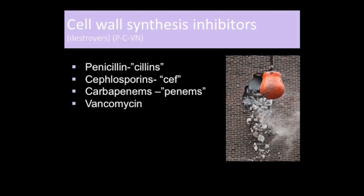The cell wall synthesis inhibitors kill the bacteria by preventing them from forming strong protective cell walls. Penicillin was our first antibiotic and saved soldiers during World War II from dying from infection. Just as soldiers destroy enemy walls, penicillin works by destroying the cell wall. For cell wall destroyers, think of PCVN: P for penicillin, C for cephalosporins and carbapenems, and V for vancomycin.